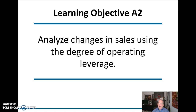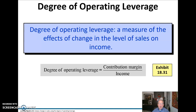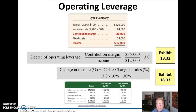How do we analyze changes in sales using a degree of operating leverage? The degree of operating leverage is a measure of the effects of the change in the level of sales on income. We take our contribution margin and divide that by our income to get the degree of operating leverage. Here, our contribution margin was $36,000 and our income was $12,000, so that gives us a degree of operating leverage of 3.